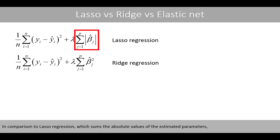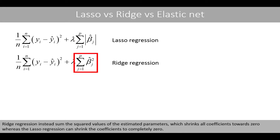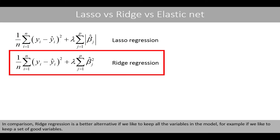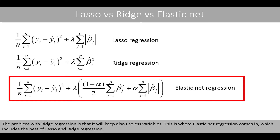Before we end this video, we'll have a quick look at the difference between LASSO regression, Ridge regression and Elastic Nets. In comparison to LASSO regression, which sums the absolute values of the estimated parameters, Ridge regression instead sums the squared values of the estimated parameters. This shrinks all coefficients towards zero, whereas LASSO regression can shrink coefficients to completely zero. LASSO regression is therefore a good option if we'd like to remove a lot of variables from the model. However, if there is a group of variables that correlate, LASSO tends to select only one variable from such a group. Ridge regression is the better alternative if we'd like to keep all the variables in the model, for example a set of good variables. The problem with Ridge regression is that it will also keep useless variables.